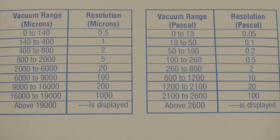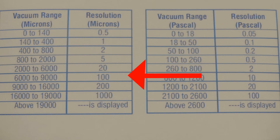The chart showing the resolution indicates, in a specific vacuum range, how much the display will change each time the display is updated. In the chart, look at the 6000 to 9000 micron range and you will see in the resolution column 100 microns.